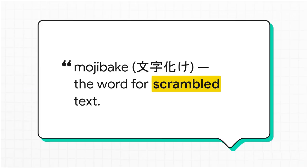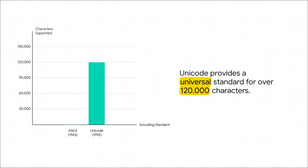An email written on a computer in France would look like complete gibberish on a computer in Japan. This digital mess actually got its own name. In Japan, they called it Mojibake, which literally means scrambled text. And I guarantee you've seen this yourself — you know when you open an old file or a weird email and it's just a bunch of random symbols and black boxes? That's Mojibake — one computer's dictionary not matching another's. So how did we fix this mess? With a brilliant solution called Unicode, created in the early 90s to be one single universal standard for everyone. ASCII had room for 128 characters, but Unicode has space for over 120,000. It gives a unique number to pretty much every character from every language on earth — and yes, that includes every single emoji on your phone. Problem solved.